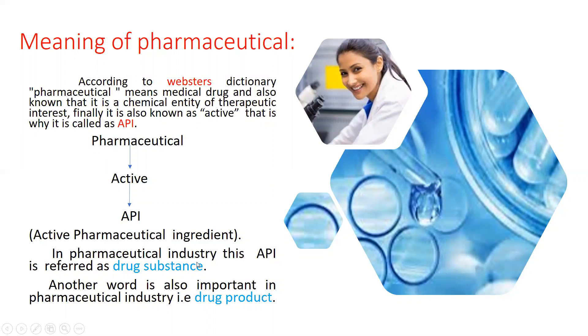In the pharmaceutical industry, this API is referred to as drug substance and is also known as raw material. Another important term in the pharmaceutical industry is drug product.